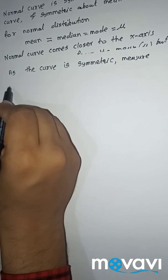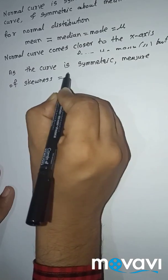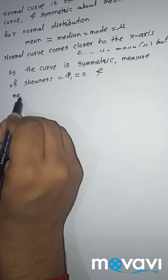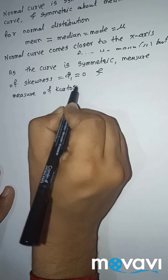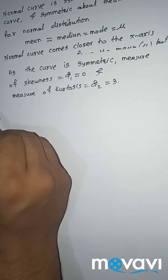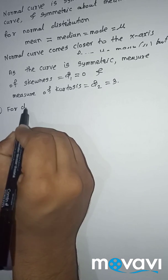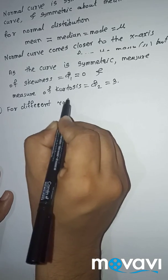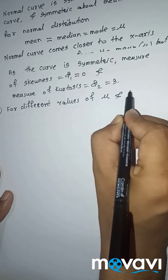Next property: as the curve is symmetric, the measure of skewness β₁ is 0, and the measure of kurtosis β₂ is 3. For different values of mean μ and standard deviation σ, we get different normal distributions.